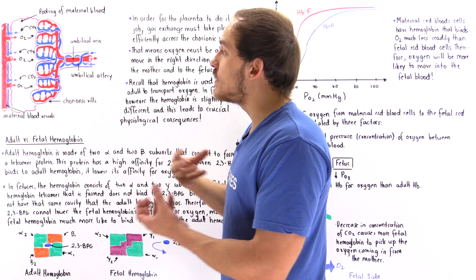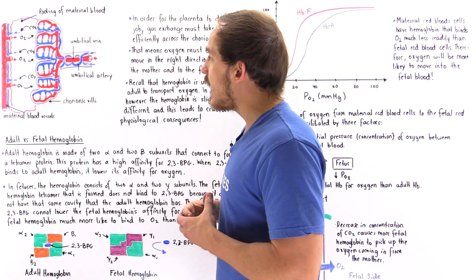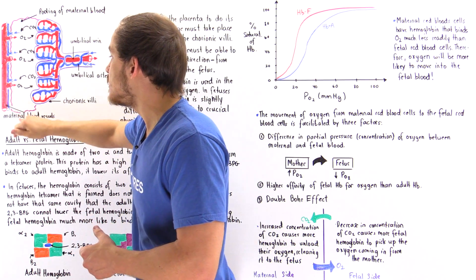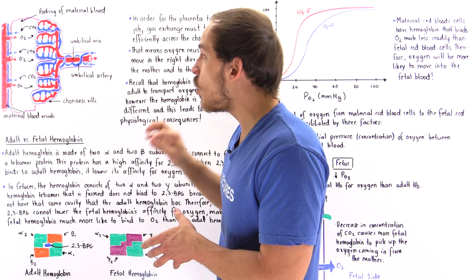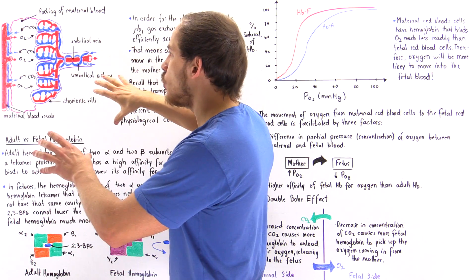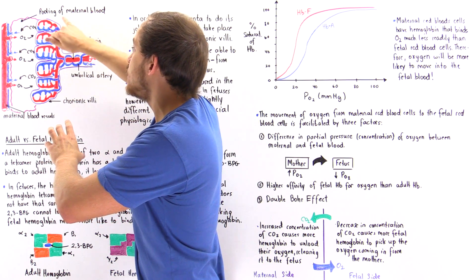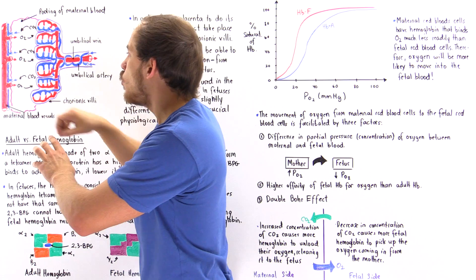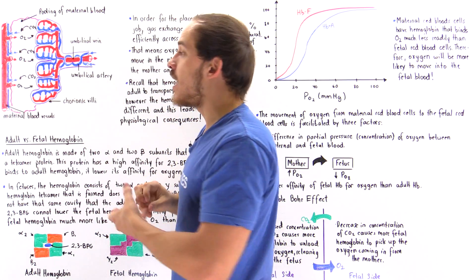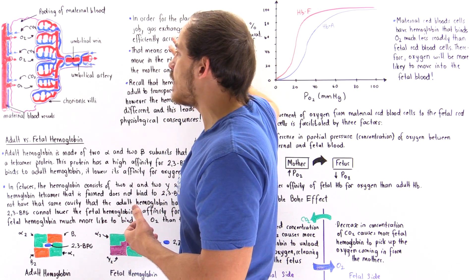When the placenta was actually developed, the chorion released digestive enzymes that digested tiny holes inside the maternal blood vessels, and those holes allowed blood to leak out. The way exchange takes place is that within the pool of maternal blood, we have oxygen.